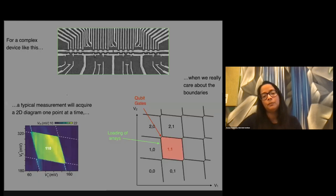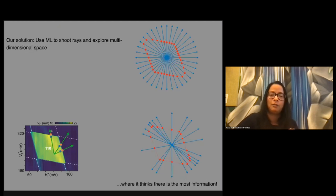So one, two applications that I will tell you about, and how we use computer vision, or let's call it ML or AI. One of the ways we use the AI is that we tried to go from this situation, where we acquired such a really beautiful 2D map, and then tried to understand where the boundaries are, because this is where we need to go to load and operate our qubits. If we care about the boundaries, we don't really need to measure this. So what we did in collaboration with our partners from the computer science department at the University of Copenhagen was to use ML to shoot rays and explore this multi-dimensional voltage space.